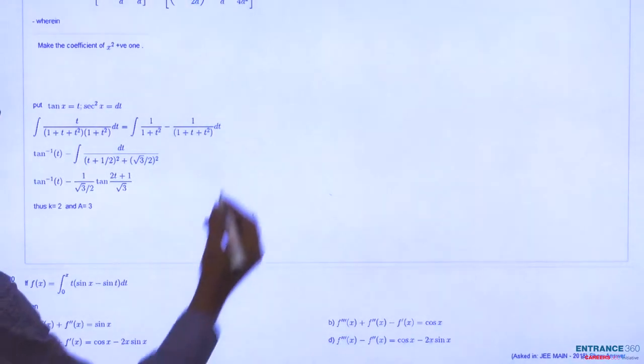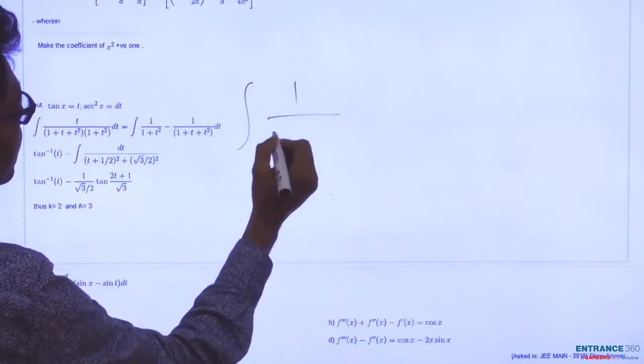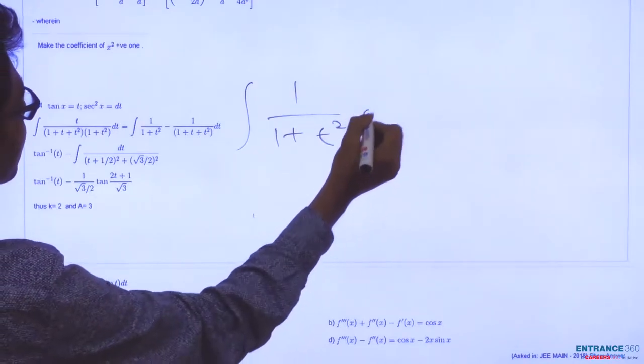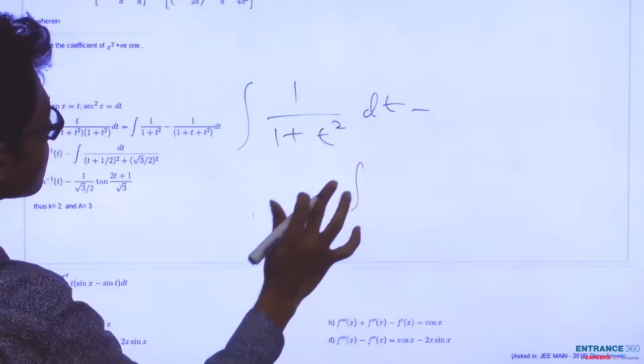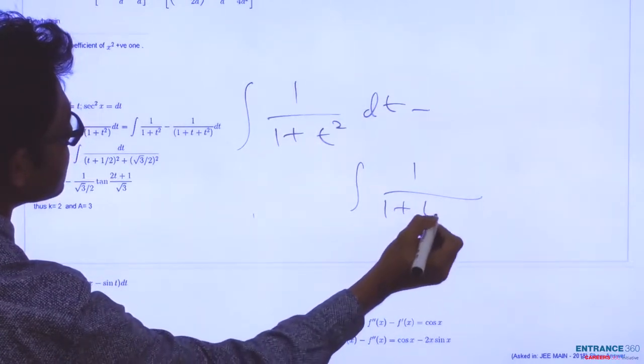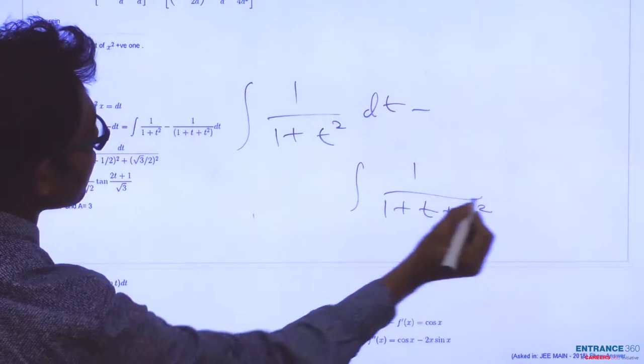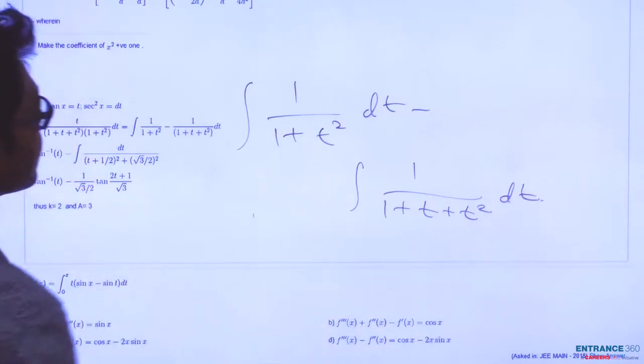By partial fractions we get the integration of 1 by 1 plus t squared dt minus the integration of 1 by 1 plus t plus t squared dt.